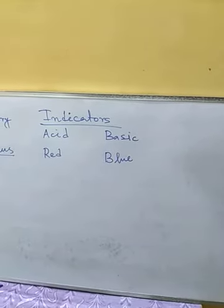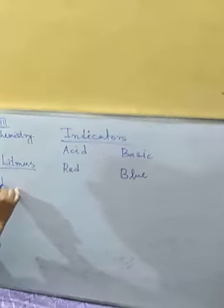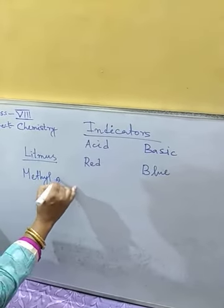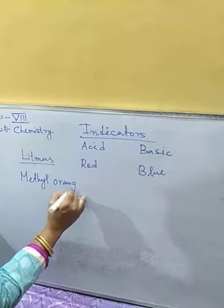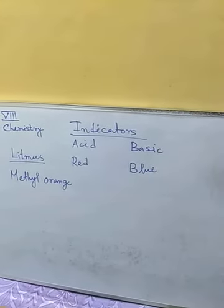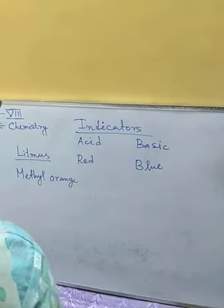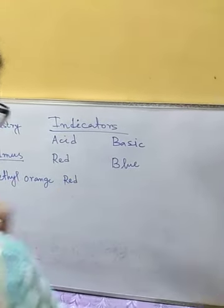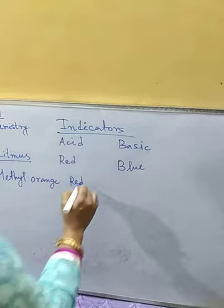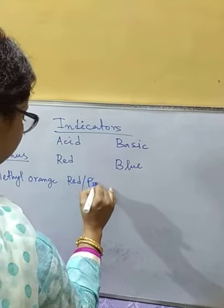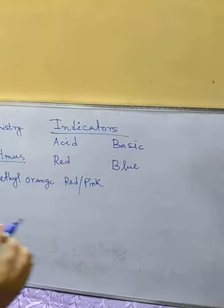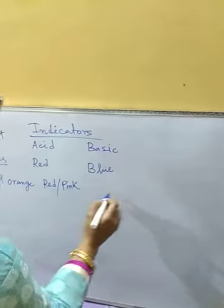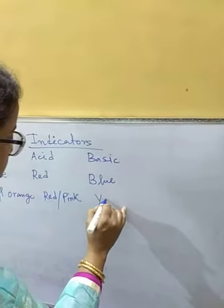Next comes methyl orange. Methyl orange is another indicator. In acid medium it will show red or rosy pink color — red or pink, we can say rosy pink. And in a basic medium it will show yellow color.